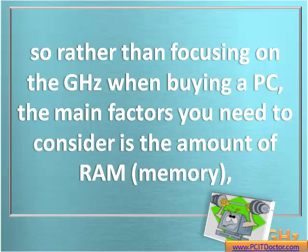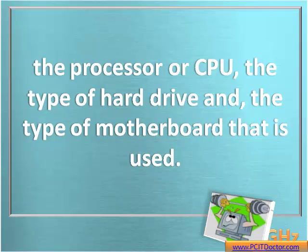Rather than focusing on the gigahertz when buying a PC, the main factors you need to consider are the amount of RAM or memory, the processor or the CPU, and then you want to check out the type of hard drive being used, whether it's IDE, SCSI, or RAID — all these extra elements that you need to ask the technical person about.